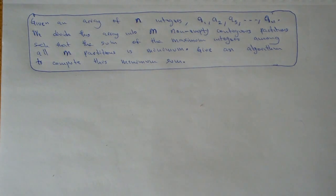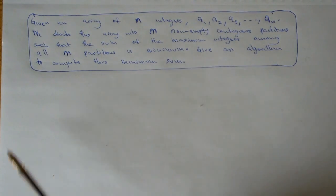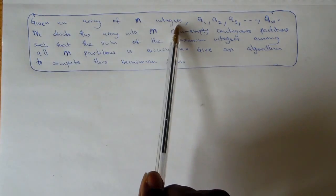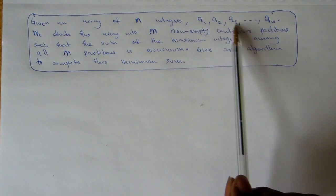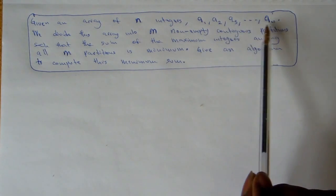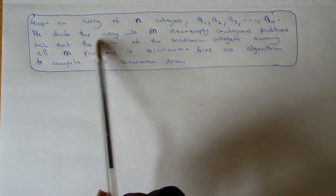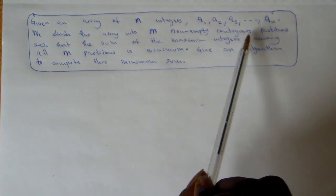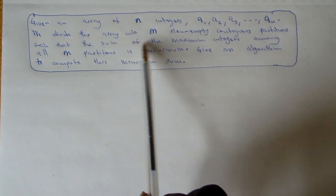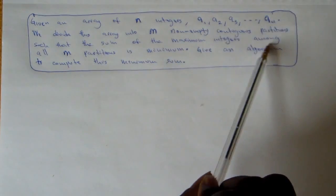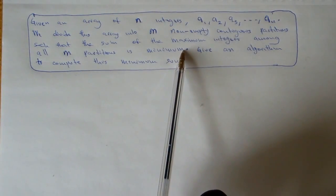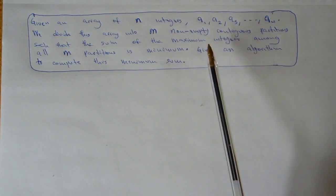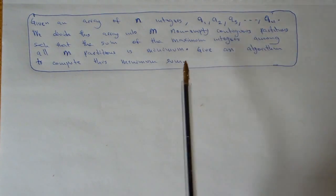Today I'll be going over a dynamic programming problem which I came across recently. We're given an array of n integers a1, a2, a3 down to an. We want to divide the array into m non-empty contiguous partitions so that the sum of the maximum integers among all m partitions is minimum. We're to give an algorithm to compute the minimum sum.